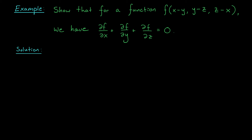Here's an interesting example to wrap up our lesson. We want to show that for any function f that depends on x minus y, y minus z, and z minus x, this partial differential equation will be satisfied: partial f by partial x plus partial f by partial y plus partial f by partial z equals zero. If you want a concrete example, how about the function (x minus y)(y minus z) times e to the (z minus x)? As an exercise, show that this function satisfies this equation. But in this question, we want to show it works for any such function — it sounds hard, but really it's just a chain rule question.